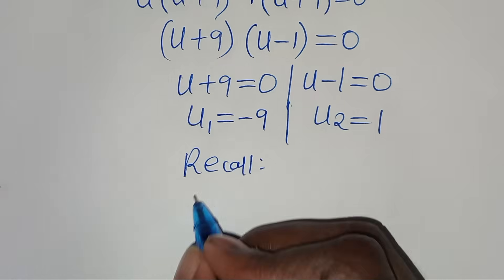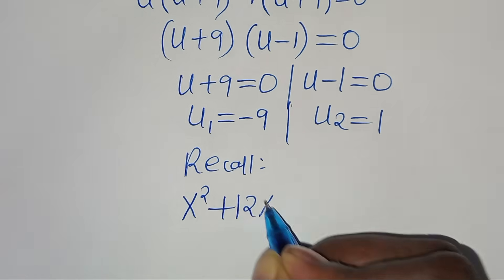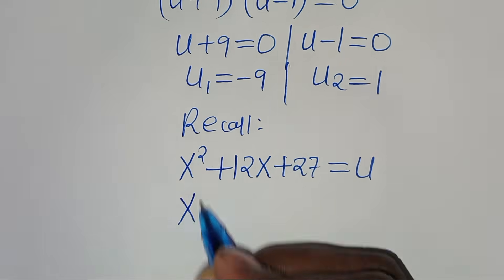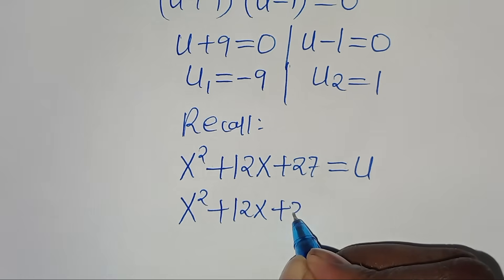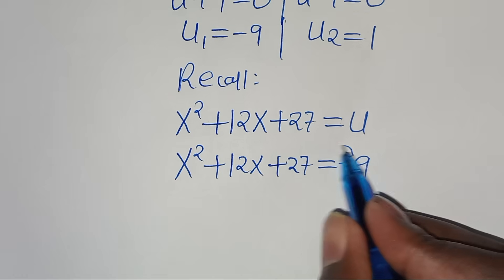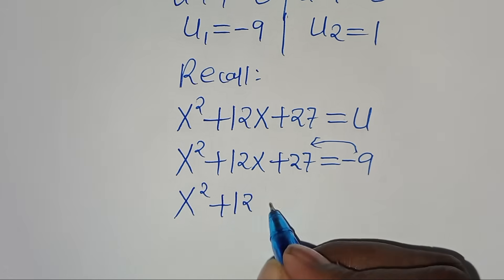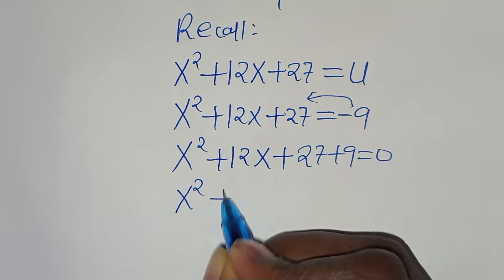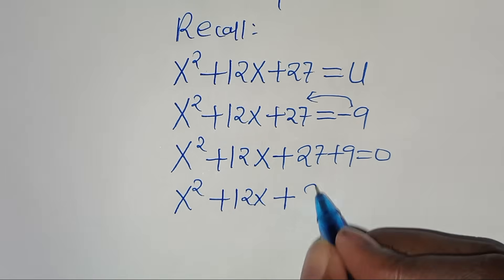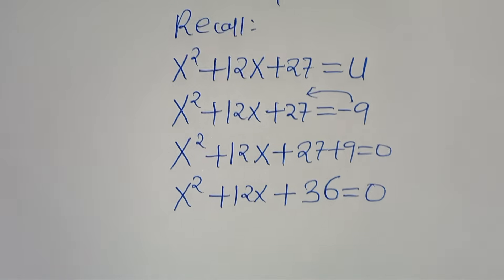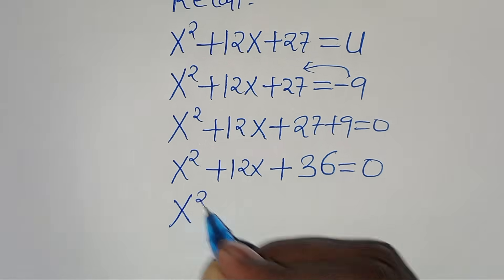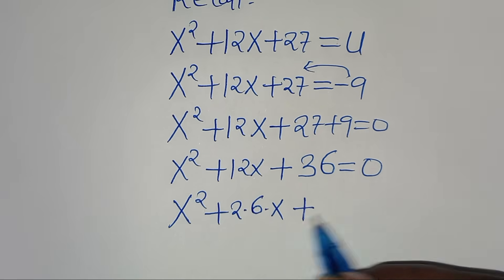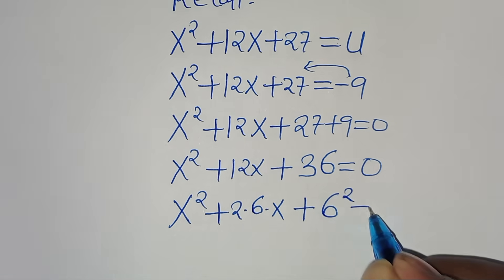Recalling that u = x² + 12x + 27, we substitute u₁ = −9: x² + 12x + 27 = −9. Moving −9 to the left gives x² + 12x + 27 + 9 = 0, so x² + 12x + 36 = 0. We can write 12x as 2 × 6 × x and 36 as 6², setting up a perfect square.